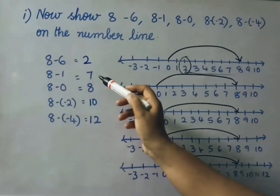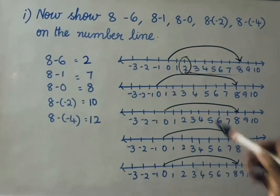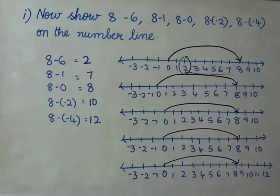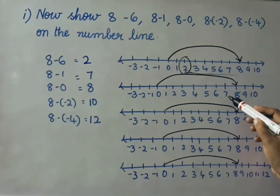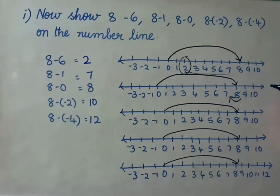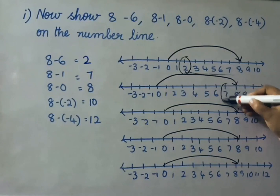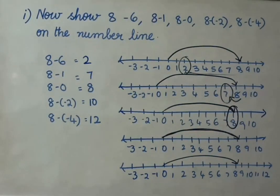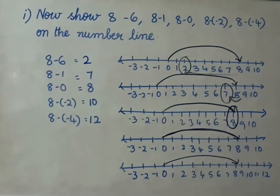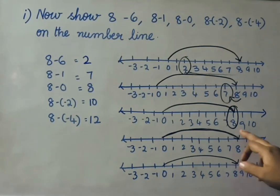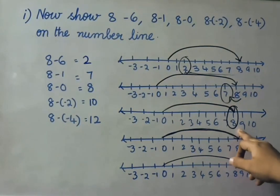8 minus 1 — that is 7. First we show 0 onwards 8, then count 1 number backward from 8, giving 7. See the third one: 8 minus 0 — that means 8 only. 0 onwards 8 we have shown. 8 minus 0 means no number to subtract, so the answer is 8 itself.